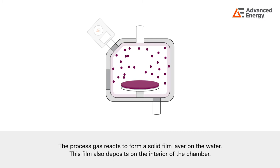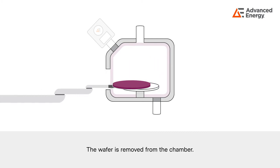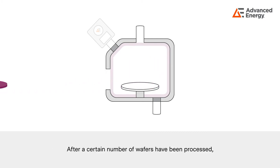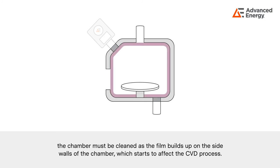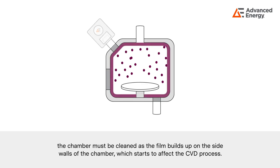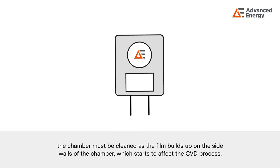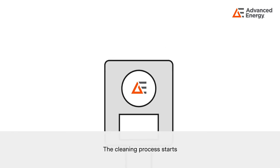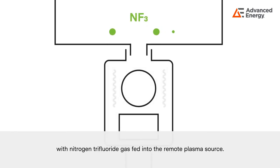This film also deposits on the interior of the chamber. The wafer is removed from the chamber, and after a certain number of wafers have been processed, the chamber must be cleaned as the film builds up on the side walls and starts to affect the CVD process. The cleaning process starts with nitrogen trifluoride gas fed into the remote plasma source.